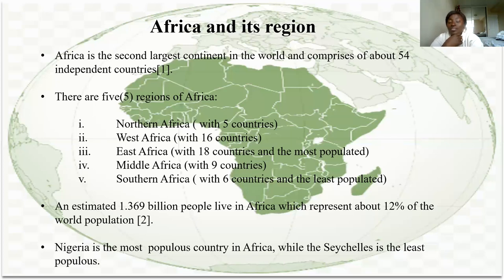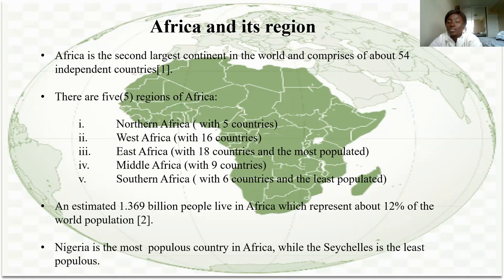Africa is the second largest continent in the world and contains about 54 countries. There are five regions: Northern Africa, West Africa, East Africa, Middle Africa, and Southern Africa. Northern Africa has five countries, West Africa has 16, East Africa has 18, and West Africa has the largest population. Southern Africa is the smallest in land but significant in population. There are at least 1.3 billion people living in Africa, making up about 12% of the world's population.